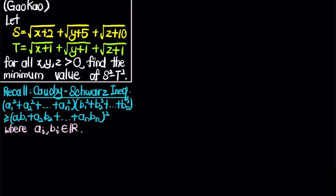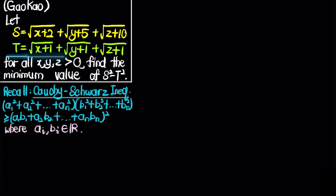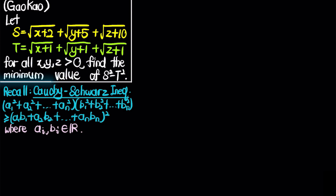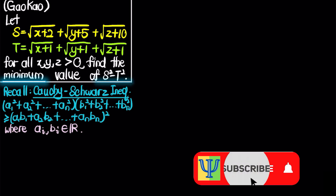Let's solve a math problem from the Gaokao exam, which is a very competitive college entrance exam in China. We let S equal the square root of x+2 plus the square root of y+5 plus the square root of z+10, and T equal the square root of x+1 plus the square root of y+1 plus the square root of z+1, where x, y, z are greater than 0. The problem asks us to find the minimum value of S² minus T².